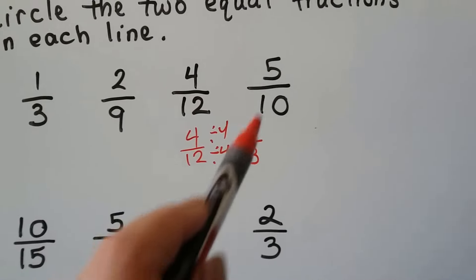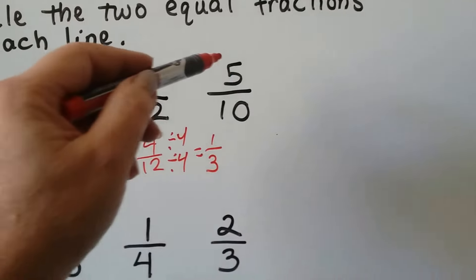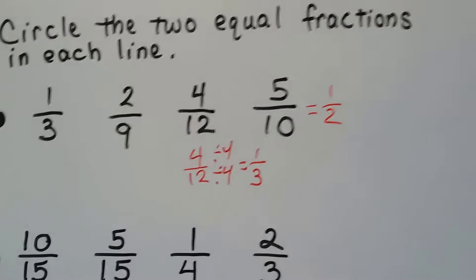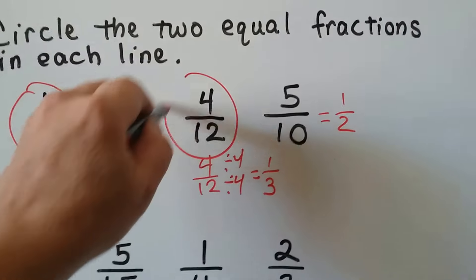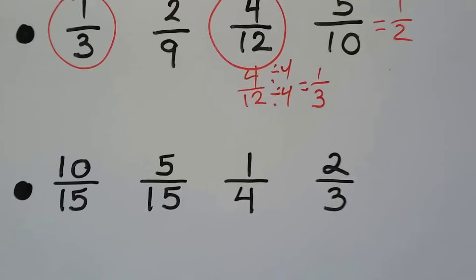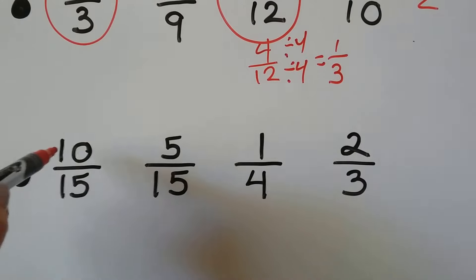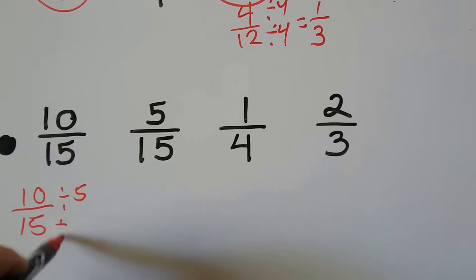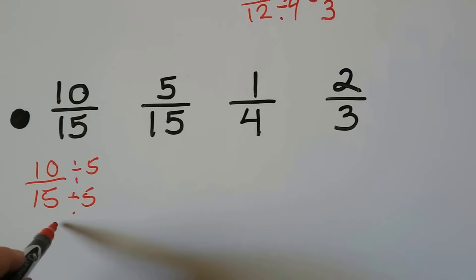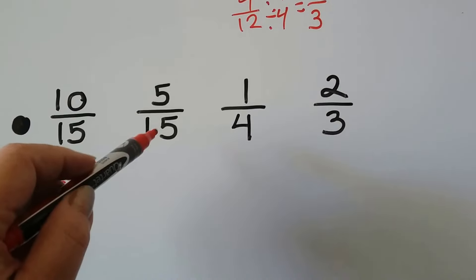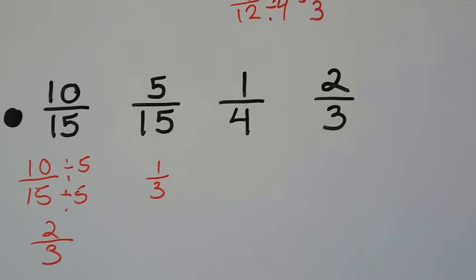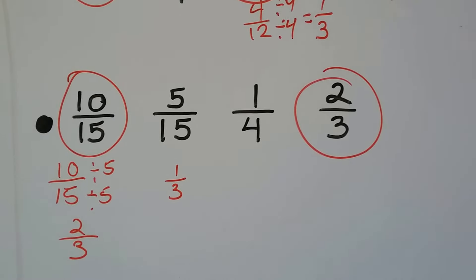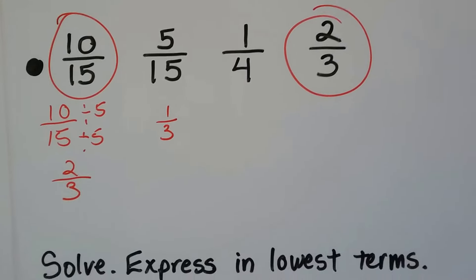Let's try this one. What would this be reduced to lowest terms? We could divide this ten by 5 and divide the fifteen by 5. And what would we get? Two-thirds, right? If we divided this by five and this by five, we'd get one-third. So the two fractions that are the same are the ten-fifteenths and the two-thirds. See? So you might have to reduce them to find the answer, which is no big deal. Just find some number that they have in common and do it.